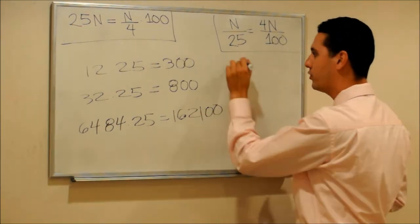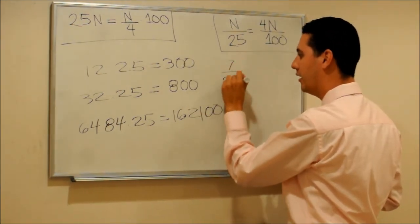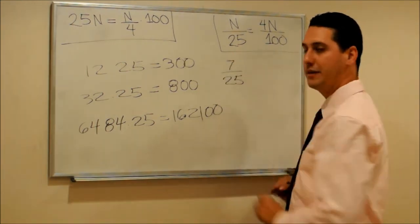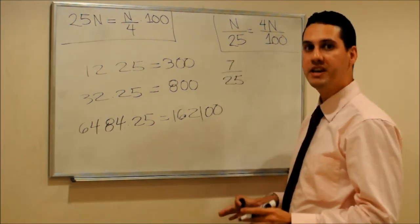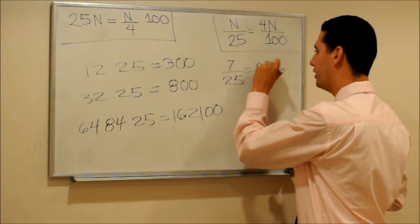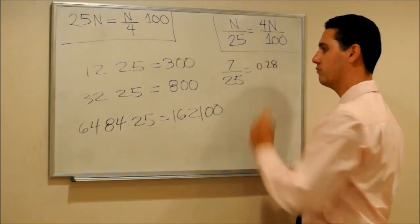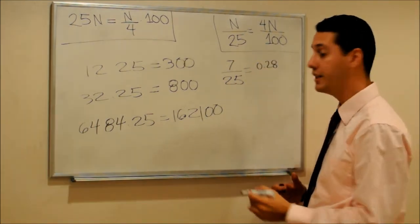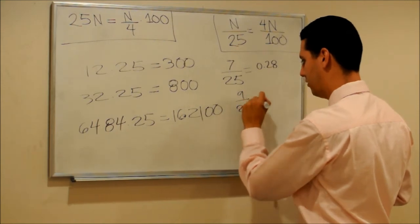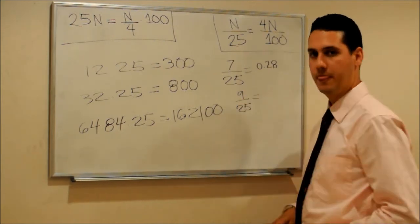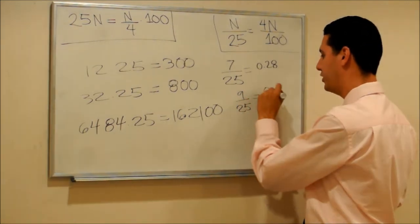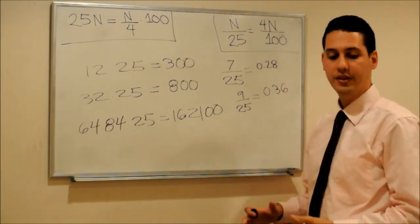For example, let's divide 7 by 25. 7 times 4 is 28, so the answer would be 0.28. What is 9 divided by 25? 9 times 4 is 36, so it would be 0.36.